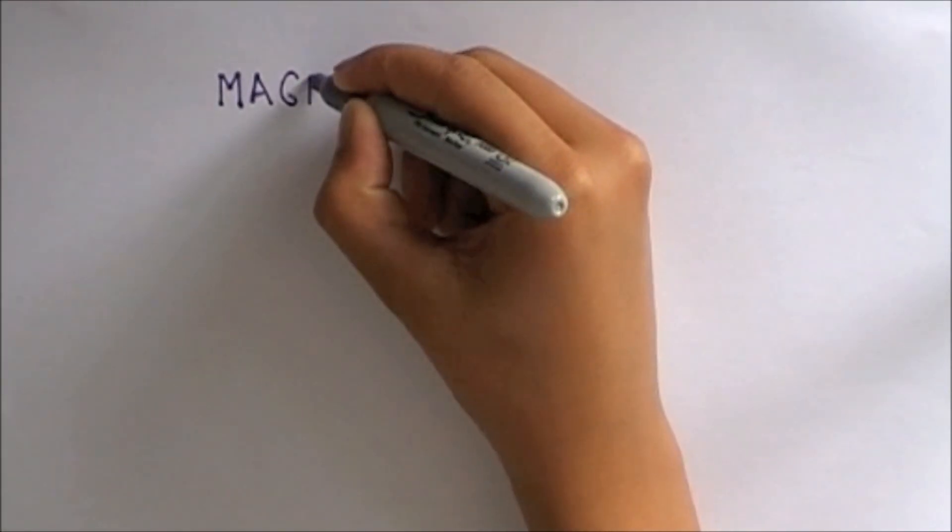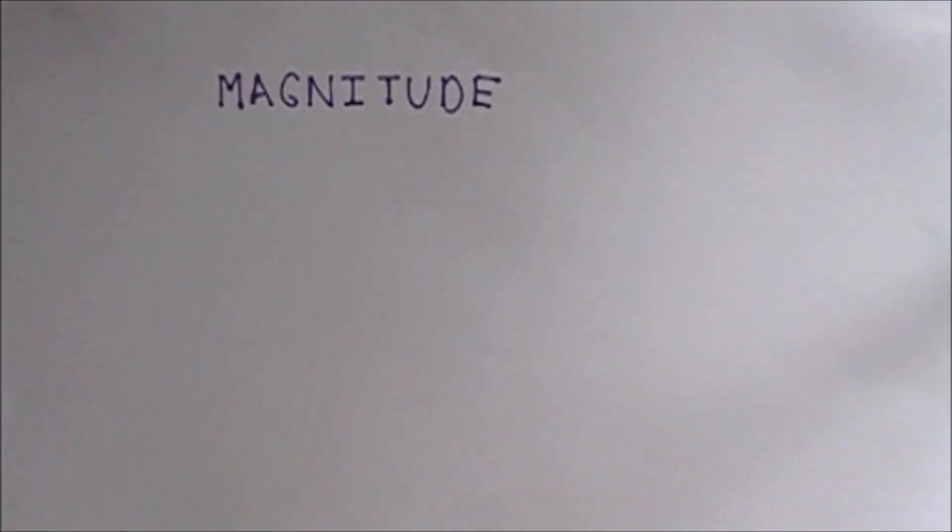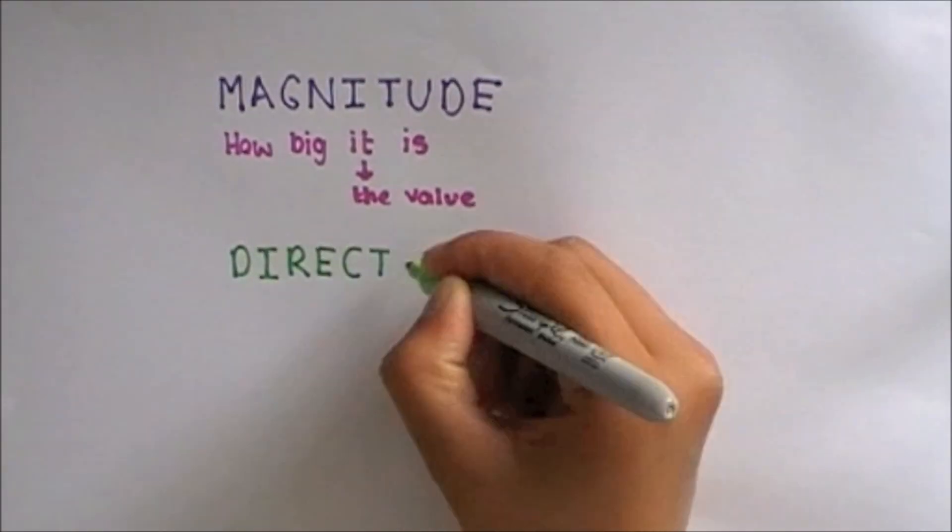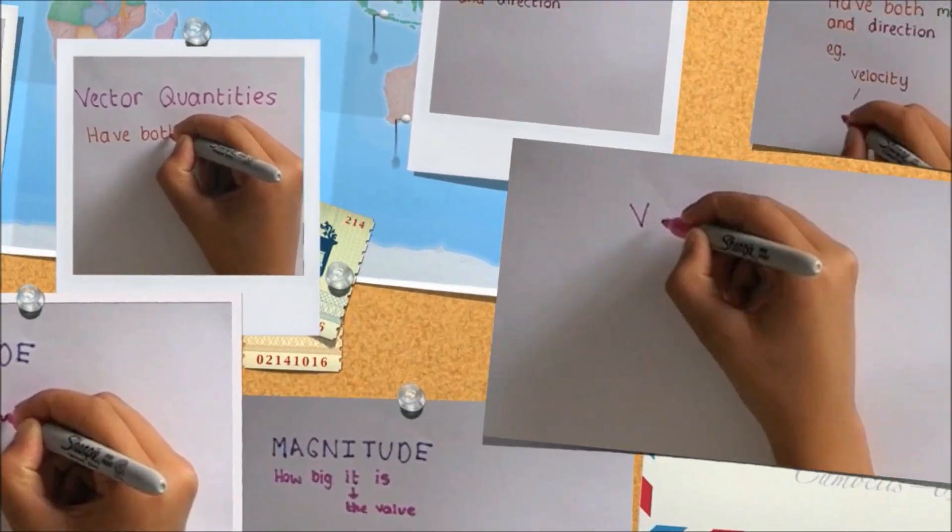To understand what the terms vector and scalar mean, we will first need to know about magnitude and direction. Magnitude is a way of describing how big a value is, and direction tells us which way something is travelling.